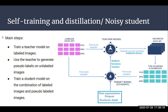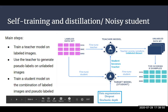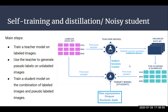Next is the self-training and distillation method. The classical self-training and distillation method consists of three main steps. First, train a teacher model on labeled images. Then use that teacher model to generate pseudo labels on unlabeled images. After that, take the top-scoring examples from the unlabeled dataset above some threshold, use that dataset along with the labeled dataset to train a student model, then make that student model the new teacher and repeat the whole process until convergence is reached or all iterations are done.